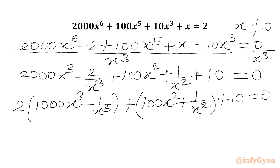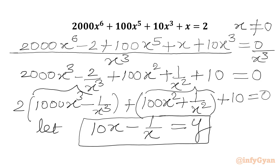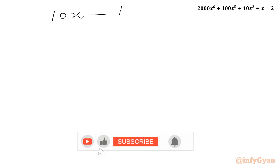Now we are going to use substitution. Let us say 10x minus 1 over x equal to y. Our target is to write the value of both brackets in terms of y. So let us find out the values of both brackets.